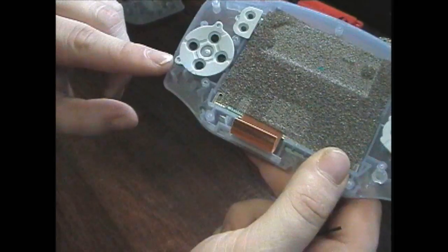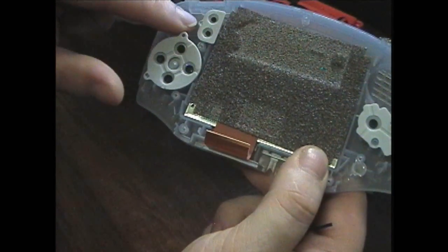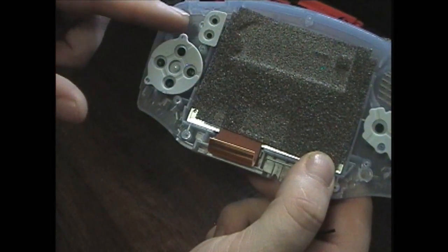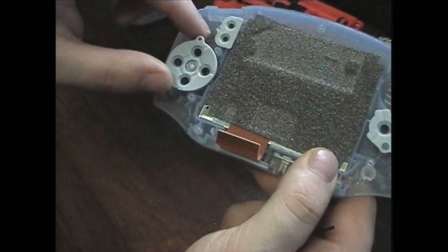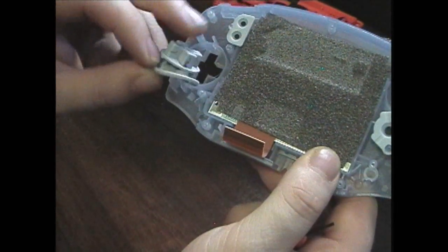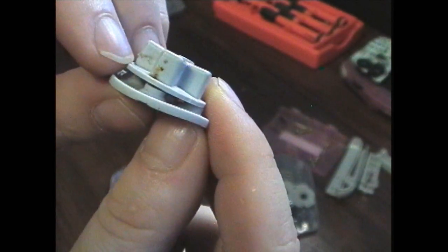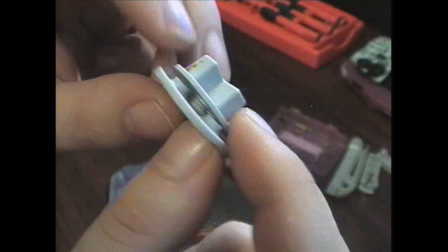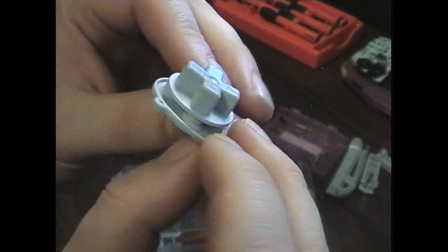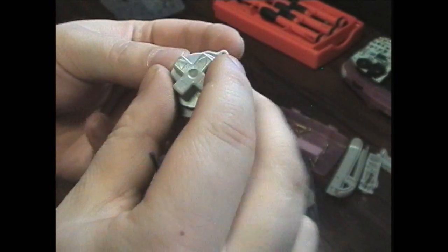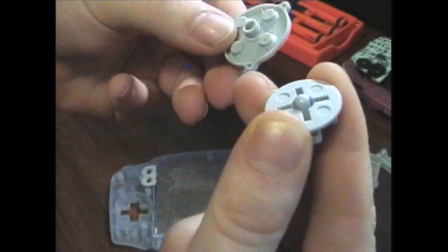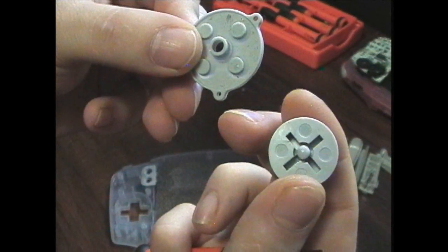Now we got the controller. You can see they made little pieces, like little pegs, that you just stick the rubber pieces right on. It makes it really easy to put them back together. Here's the D-pad—look at all that gunk we got on there. That's pretty gross. We're gonna definitely clean that up. You can just pull this right off.